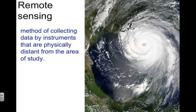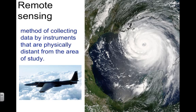The last term we're going to cover is remote sensing — a method of collecting data by instruments that are physically distant from the area of study. You could use aircraft, radar, or satellite imagery, like this satellite image shown here. Going back to the ancient world, you could only see as far as your eyes could see; remote sensing changed that.